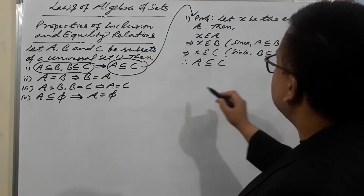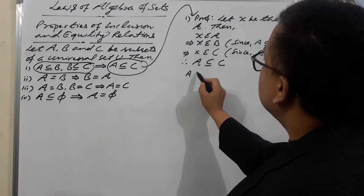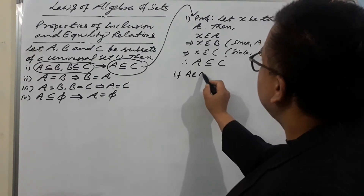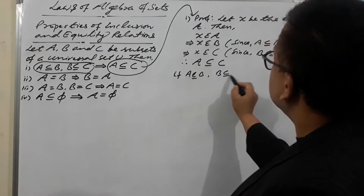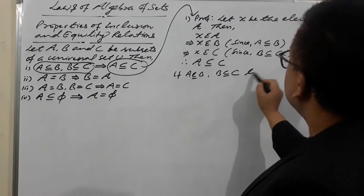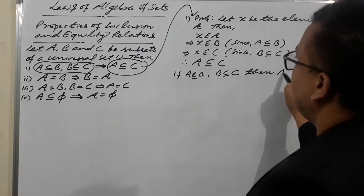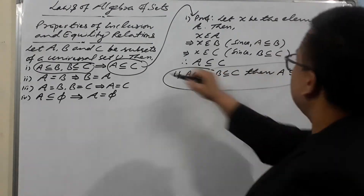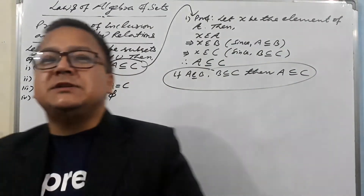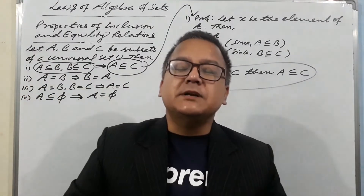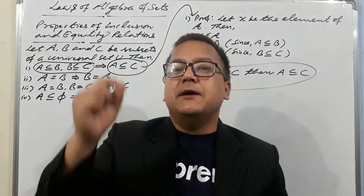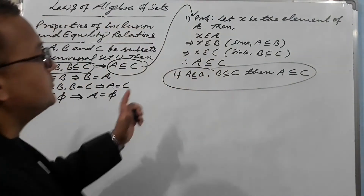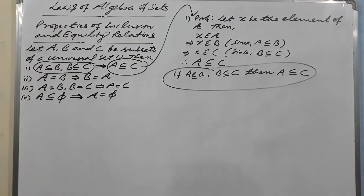So finally, if A ⊆ B and B ⊆ C, then we can write A ⊆ C. This is the conclusion of the proof of property one. If A is a subset of B and B is a subset of C, then definitely A is a subset of C.